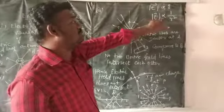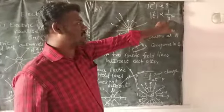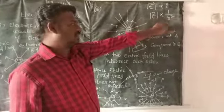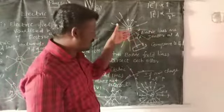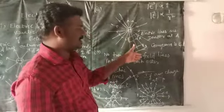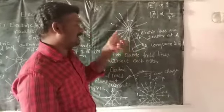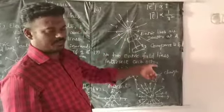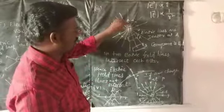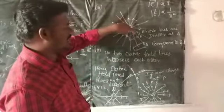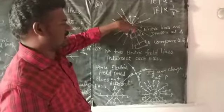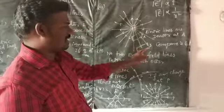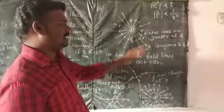The magnitude of the electric field is inversely proportional to the square of the distance. When the distance increases, the electric field strength decreases. Near to the charge, the electric field strength is maximum. With increasing distance, the electric field decreases.